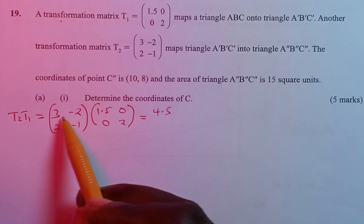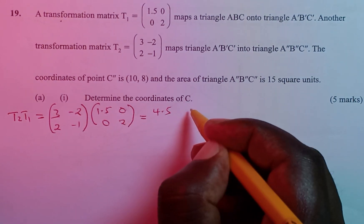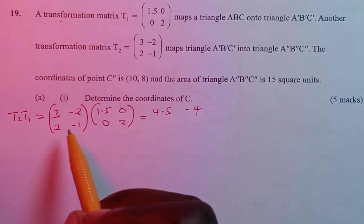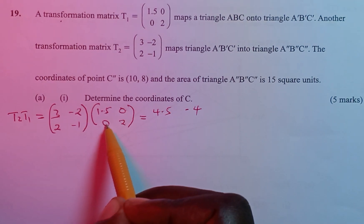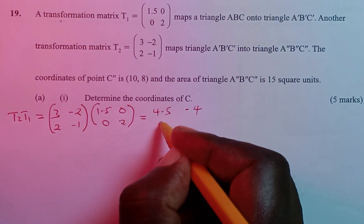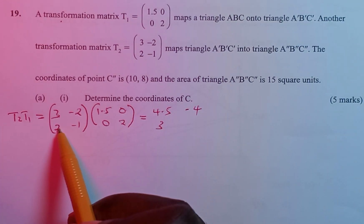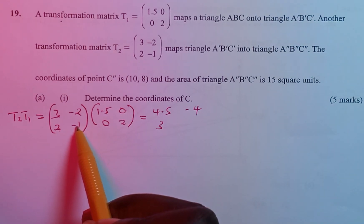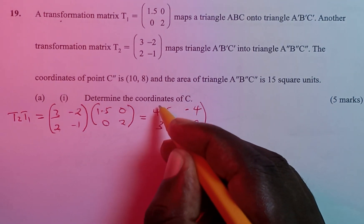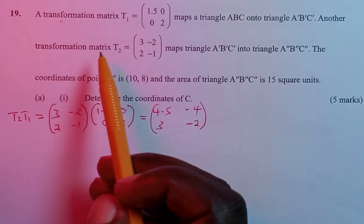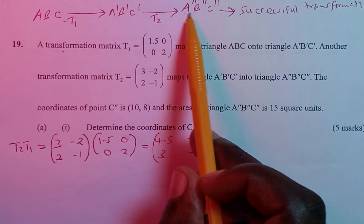Continuing the multiplication: second row first column: 2×1.5 + (−1)×0 = 3. Second row second column: 2×0 + (−1)×2 = −2. So the combined single transformation matrix is (4.5, −4, 3, −2), which maps every point of ABC directly onto its final image.